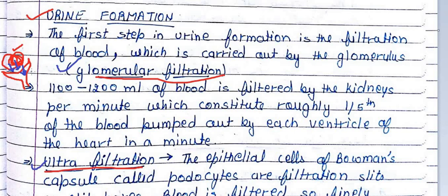Ultrafiltration is a very thorough filtration. There are podocytes which are the main filtration cells. There are slit-type spaces between the cells through which blood plasma passes, but protein portions do not pass. The rest of the things pass through. This is how the Bowman's capsule accumulates waste products, along with some products that need to be reabsorbed.